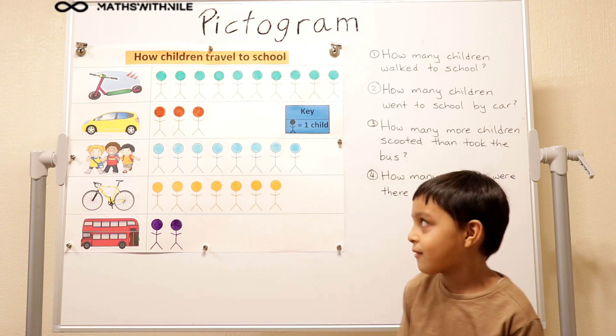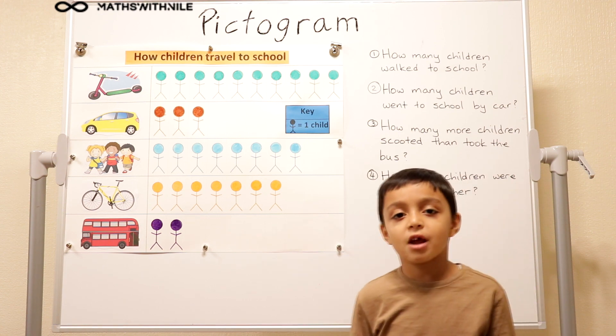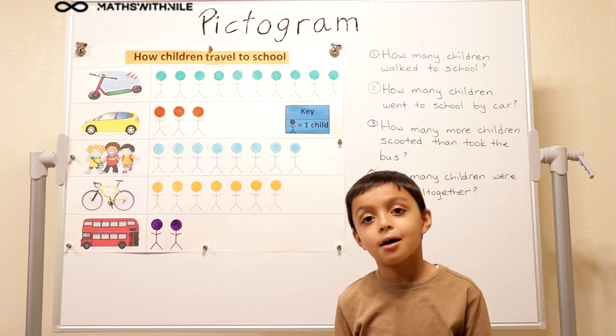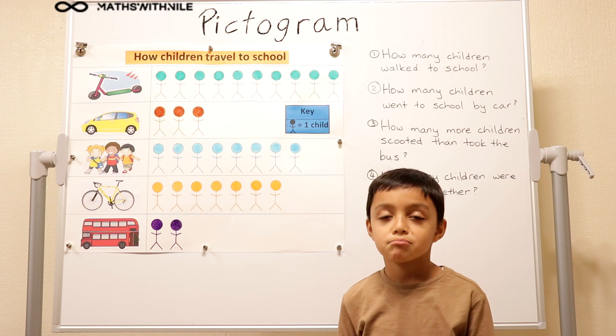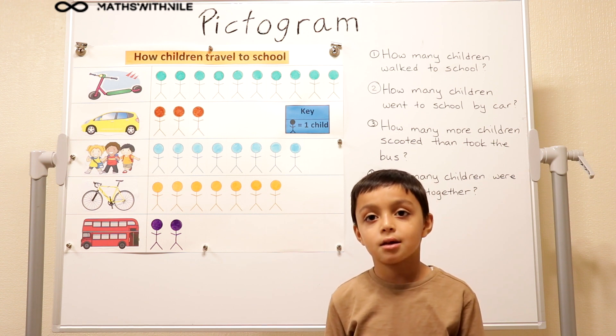A pictogram is a picture that represents a number. Well, it's a chart where we can use pictures to represent numbers.